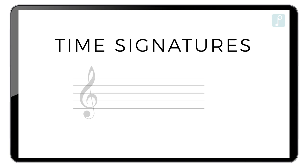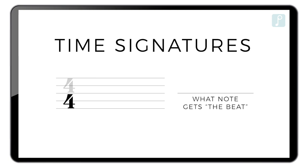A time signature is a fraction placed at the beginning of a staff with a number on top and a number on the bottom, and each of these numbers has a specific function. One of the most popular time signatures is 4/4. The bottom number tells you the note that gets the beat. When you see a 4 on the bottom, that tells you the quarter note gets the beat. How do we know it's a quarter note? A time signature is a fraction, and if you put a 1 on top you have 1 over 4, or one quarter — thus representing a quarter note.